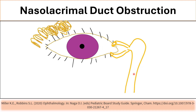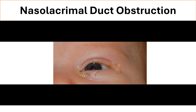The most common cause of tearing in neonates is congenital nasolacrimal duct obstruction. This is a classic presentation — patients usually come to the clinic due to concern about eye infection, but this is not an eye infection. The eyelid is normal, not swollen, with no redness, and the conjunctiva is white with no conjunctival injection.